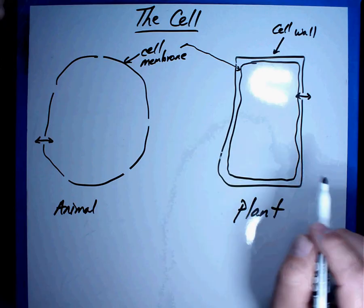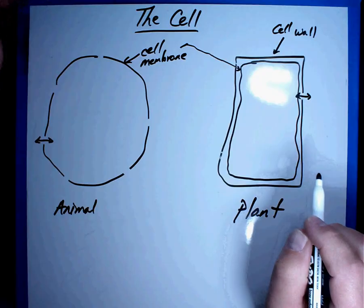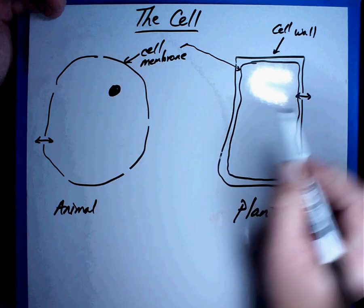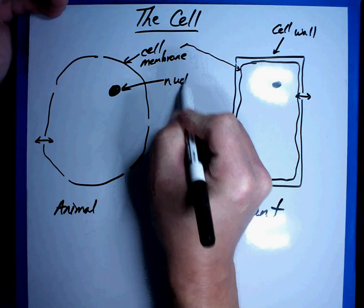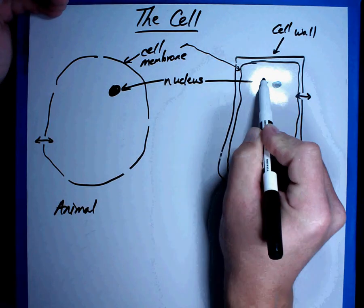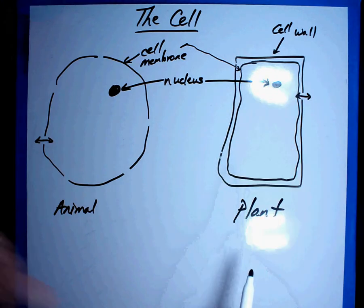So they have an outside border that allow things to move in and out. Now inside this country, if you're going to establish a country, you're going to have to have some kind of government. Something that runs everything. Well, in the cell, that is called the nucleus. It's a control center. It controls everything that's going to happen inside that cell. And so there's a nucleus in both of them.